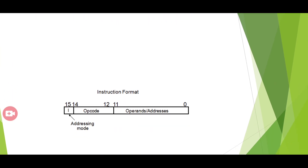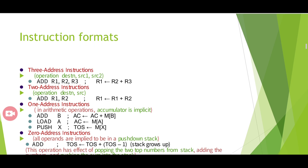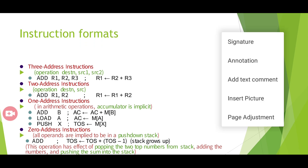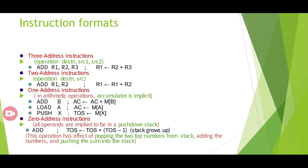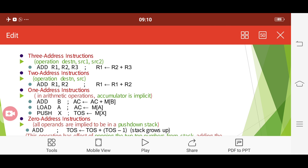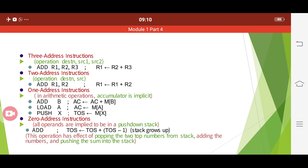Here is an example of a 16-bit instruction format. Bits 0 to 11 are used for operands or addresses, bits 12 to 14 are used for the opcode, and bit 15 — the last bit — is used for specifying the addressing mode. There are four main instruction formats: three-address, two-address, one-address, and zero-address instructions.